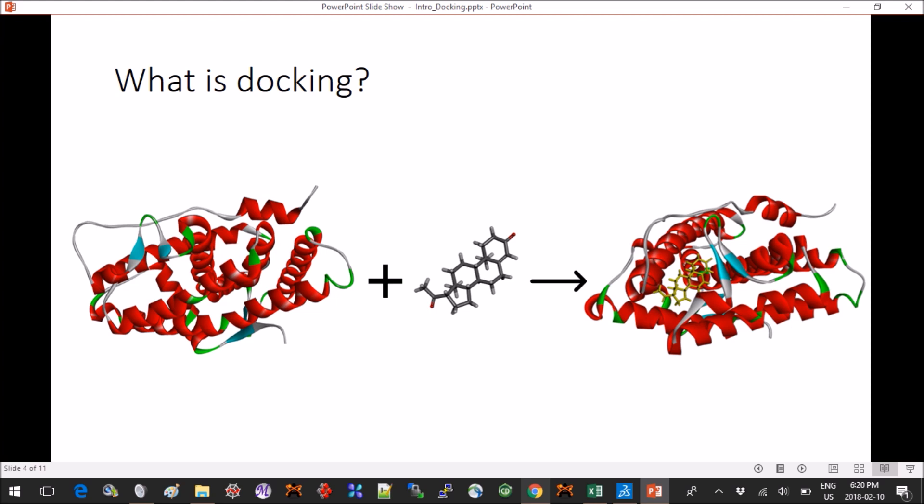And very often the crystal structure comes with a ligand that was co-crystallized with the protein. So the ligand would be another small molecule that is already in the binding cavity, and then around this ligand the program will define the binding cavity around this ligand.